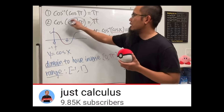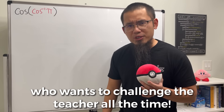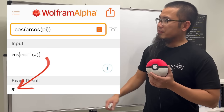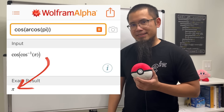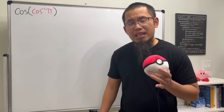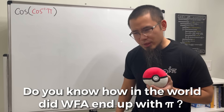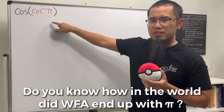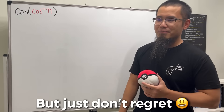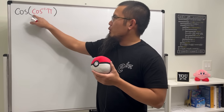But of course there's always that student who wants to challenge the teacher. He enters this on WolframAlpha — have a look. I don't know what to say sometimes, WolframAlpha is just way too powerful. You can imagine the student is really happy because he is right and I was wrong. But do you know how in the world WolframAlpha got pi for this? The complex world. If you really want to go there I will take you there, but just don't regret it. Anyway, we are going to work this inside out.